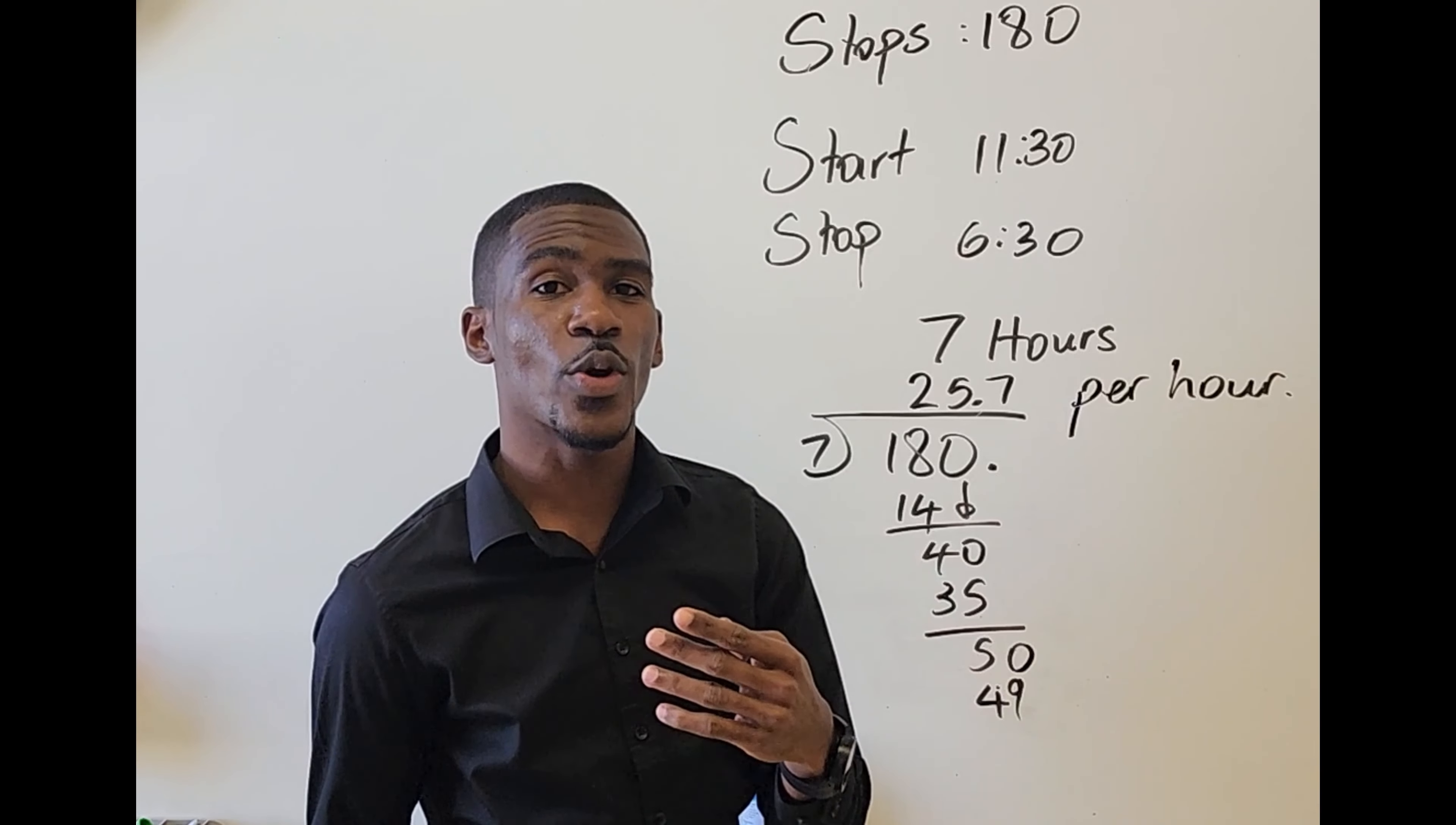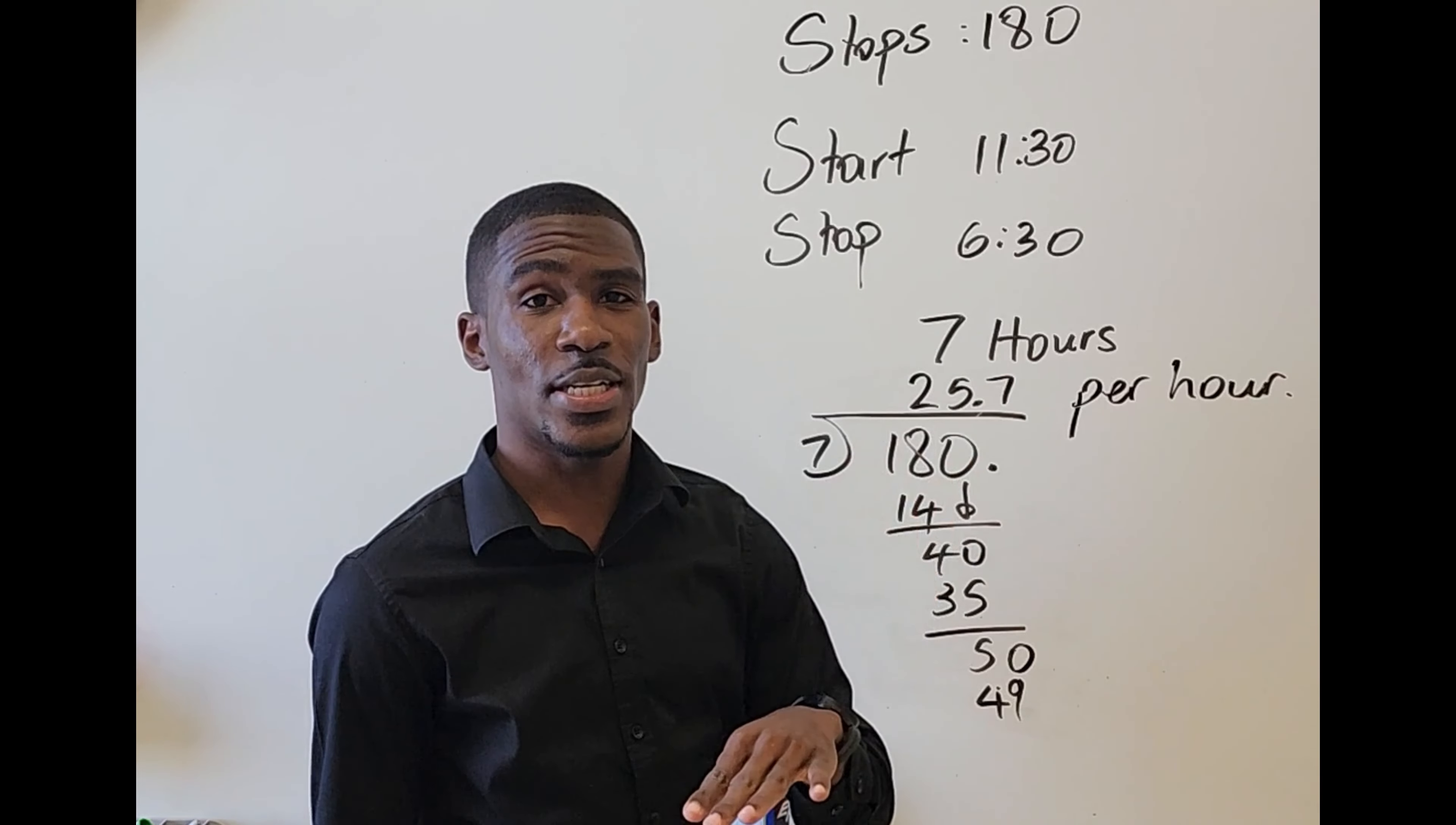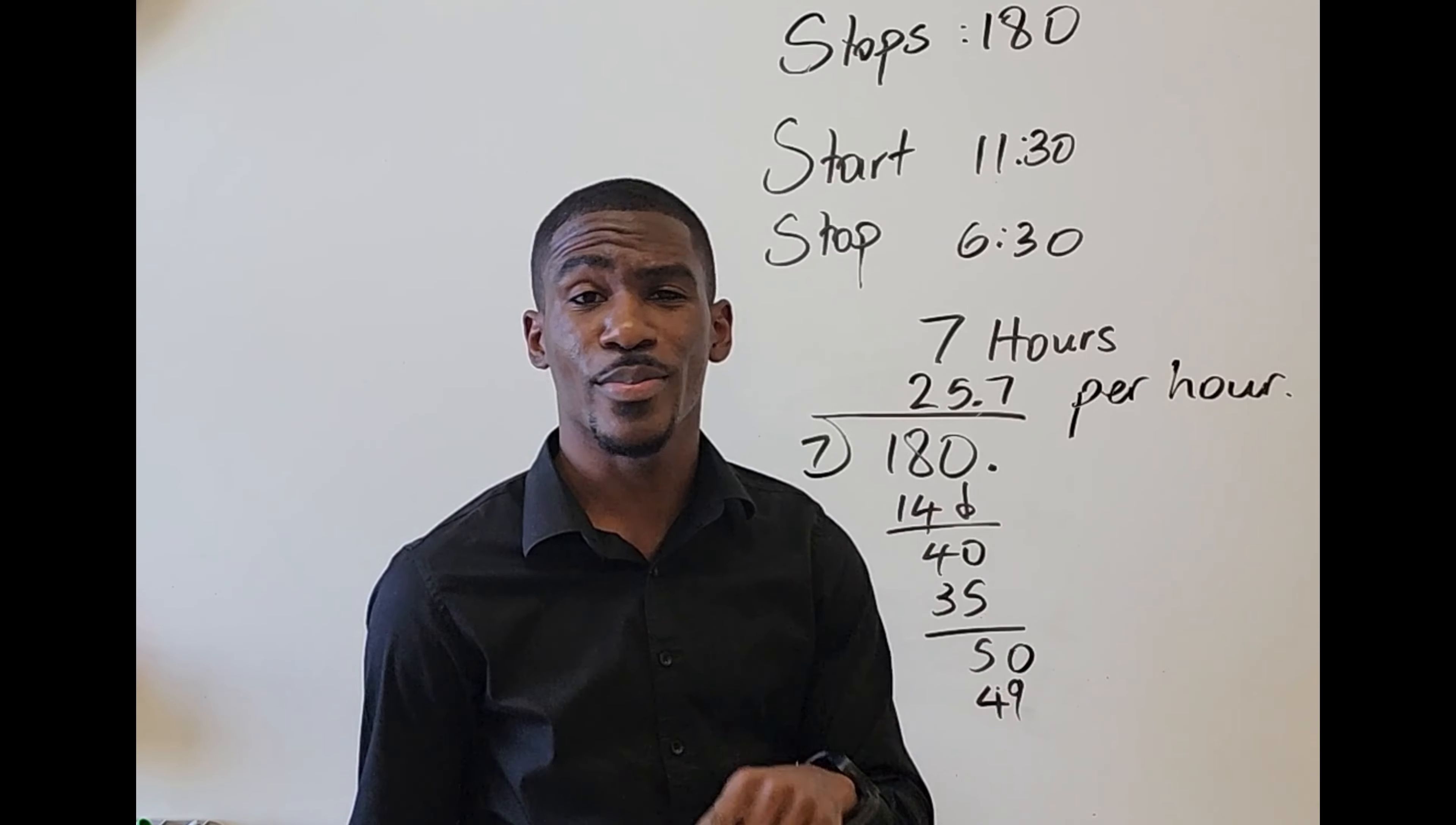If you want to finish working in 10 hours, you do 180 divided by 10 and that's going to give you 18 stops per hour. Simple.